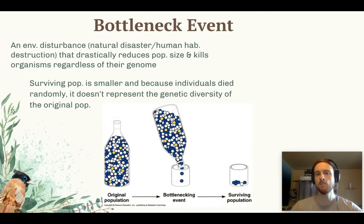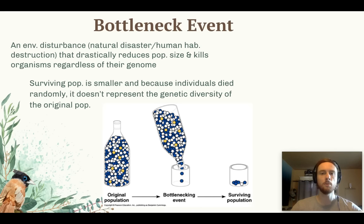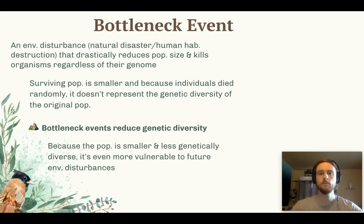Here's an image to help us understand why we call it a bottleneck. Imagine a bottle filled with all of these organisms — when we pour a few out through the narrow bottleneck, we're left with a population that no longer reflects the starting population. The yellow trait is gone, and the new population is heavily dominated by blue compared to the more balanced original. The key takeaway is that bottleneck events reduce genetic diversity and reduce population size, making the population more vulnerable to future environmental disturbances.